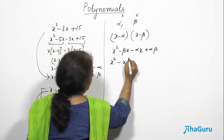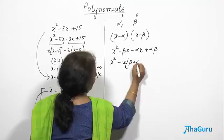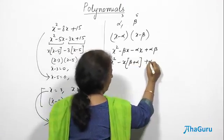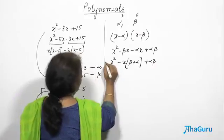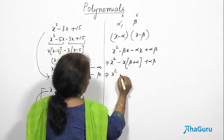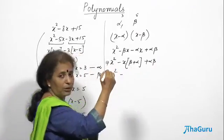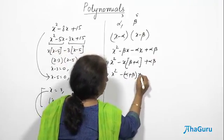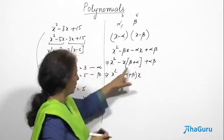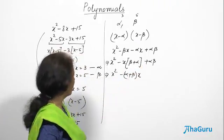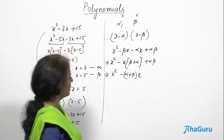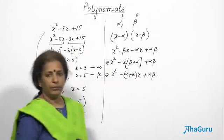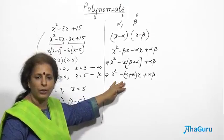Taking x as common from the middle terms, it gives alpha plus beta. So we can write this as: x squared minus (alpha plus beta)·x plus alpha·beta. This is the equation — that's all. So I don't have to really multiply term by term.